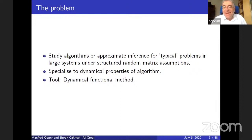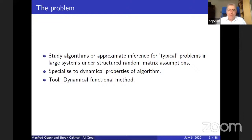The problem I'm going to discuss is algorithms for approximate inference for typical problems in large systems. The way we model typicality for large systems is to make structured random matrix assumptions. We make certain random matrix assumptions on ingredients of these models and will specialize to dynamical properties of algorithms, especially talking about a tool known as the dynamical functional method — another cornerstone of statistical physics of disordered problems besides the replica method for statics. This is a method for dealing with dynamics.